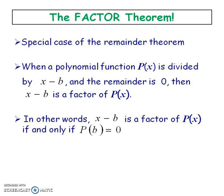Now factor theorem is the same as remainder theorem. You're going to take the opposite of your divisor so that it's a positive b, sub it into the polynomial, and get your remainder. The special case is: if the remainder is ever zero, it means your divisor went into the dividend evenly — that means it's a factor of your dividend.